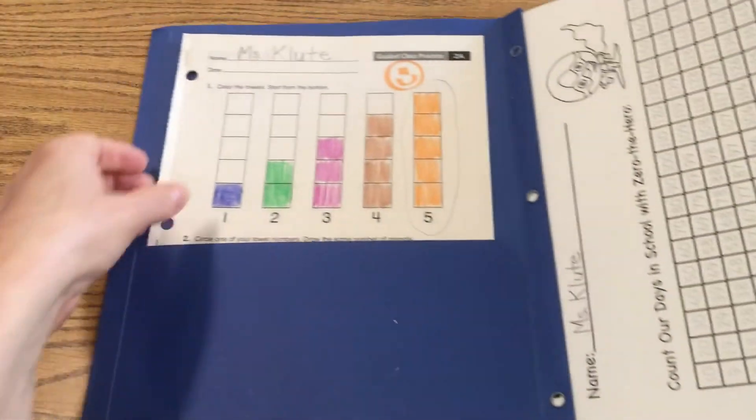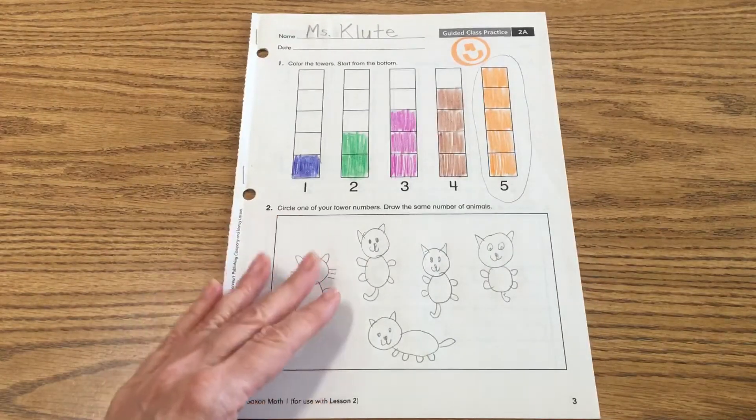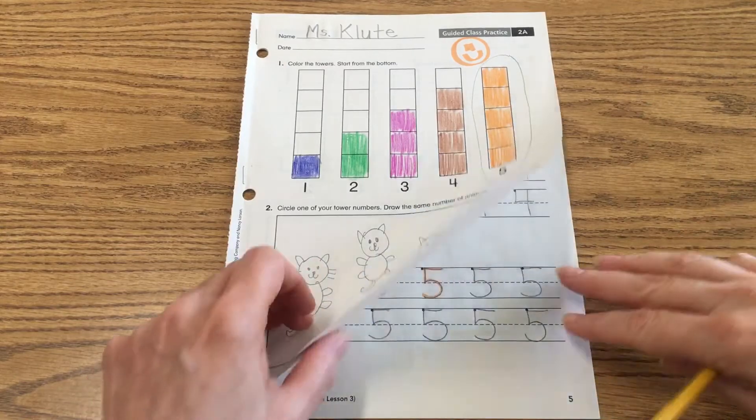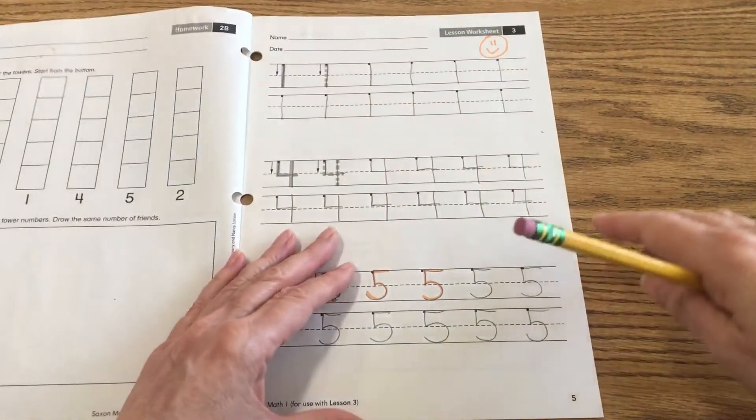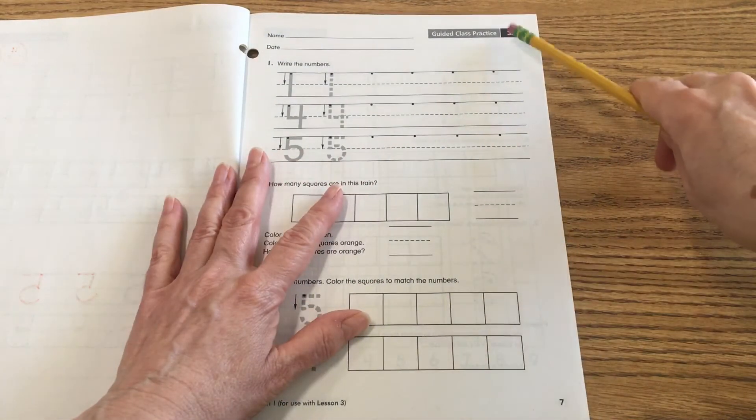Go ahead and open up and pull out your Saxon math booklet. We started that the other day and we're going to turn to Worksheet 3. I believe it's 3a. There we go, 3a at the top. That's what we're looking for, okay.